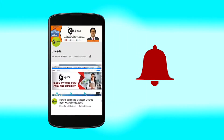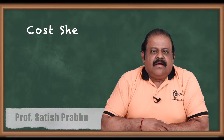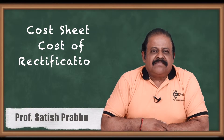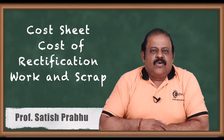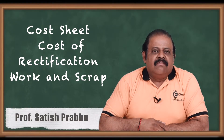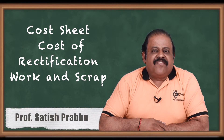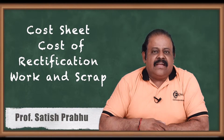Click the bell icon to get latest videos from Ikeda. Hello friends, today we will discuss one question of cost sheet where we have some typical adjustments like sale of scrap, defective work, corrected, etc.